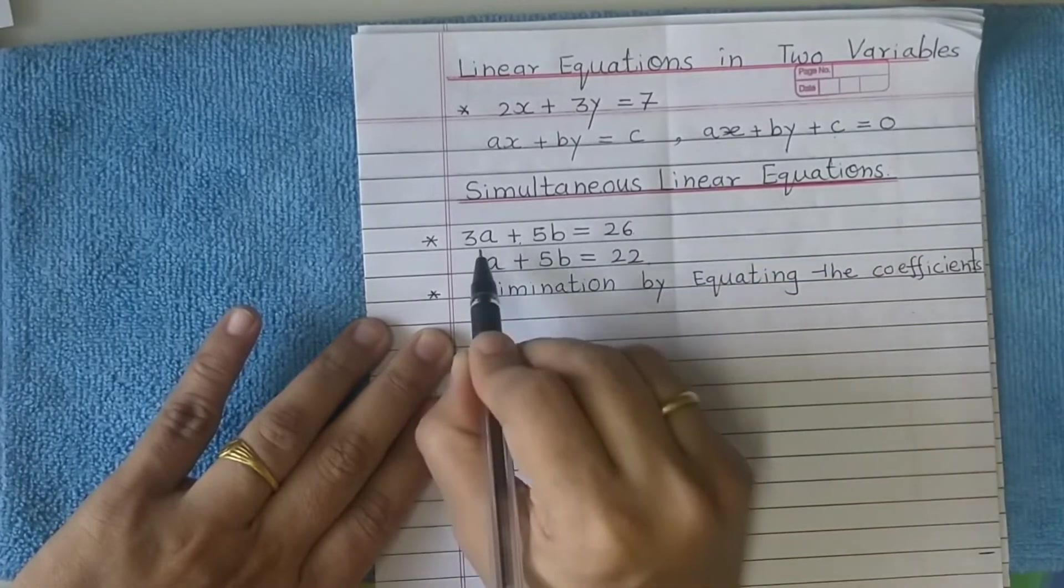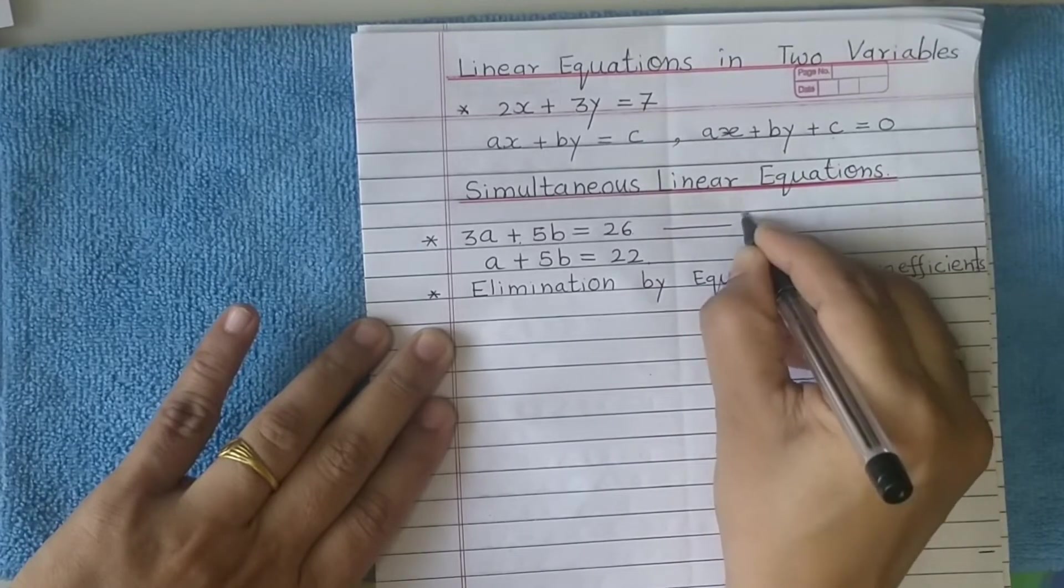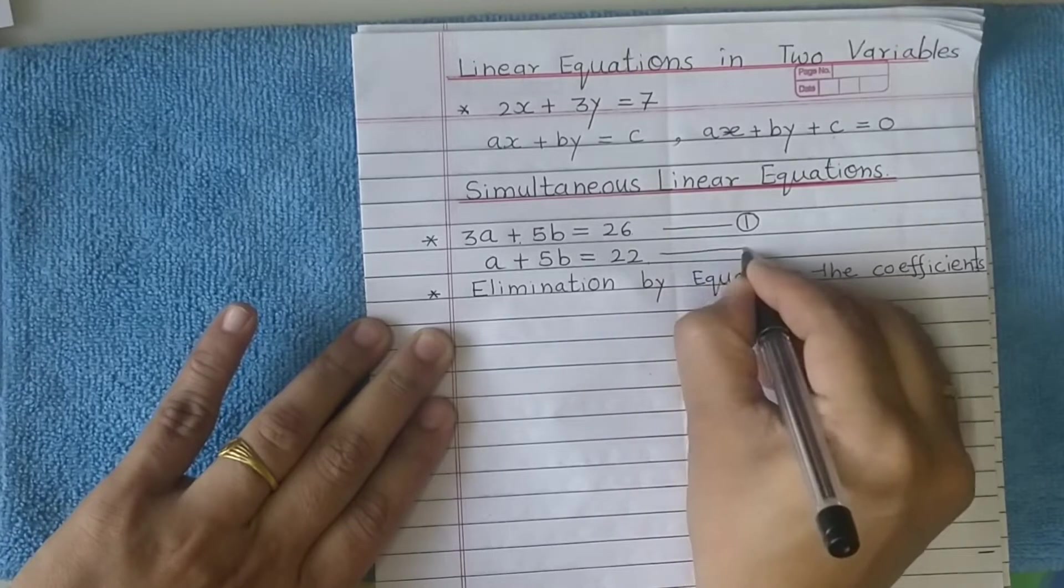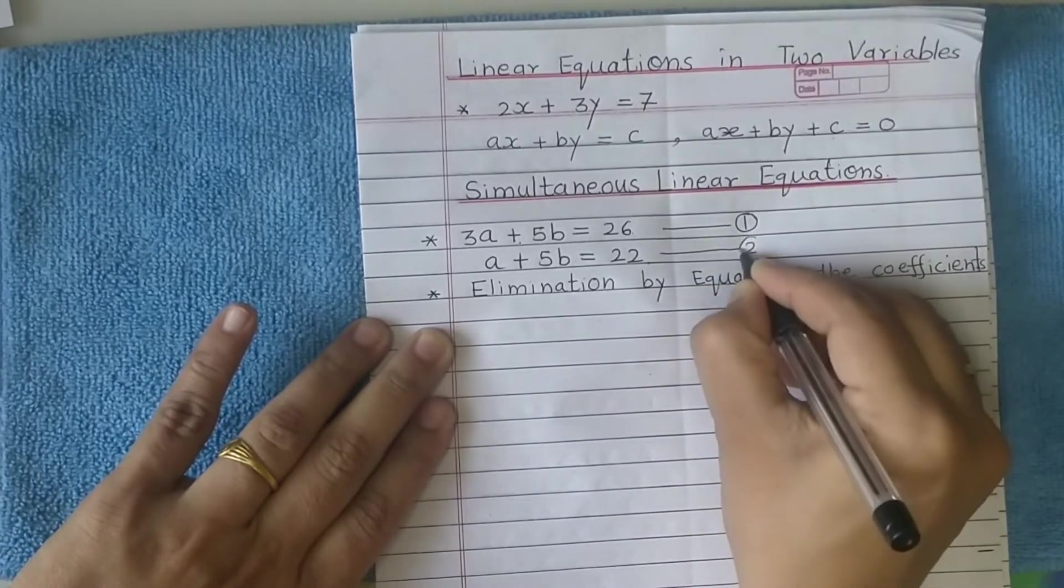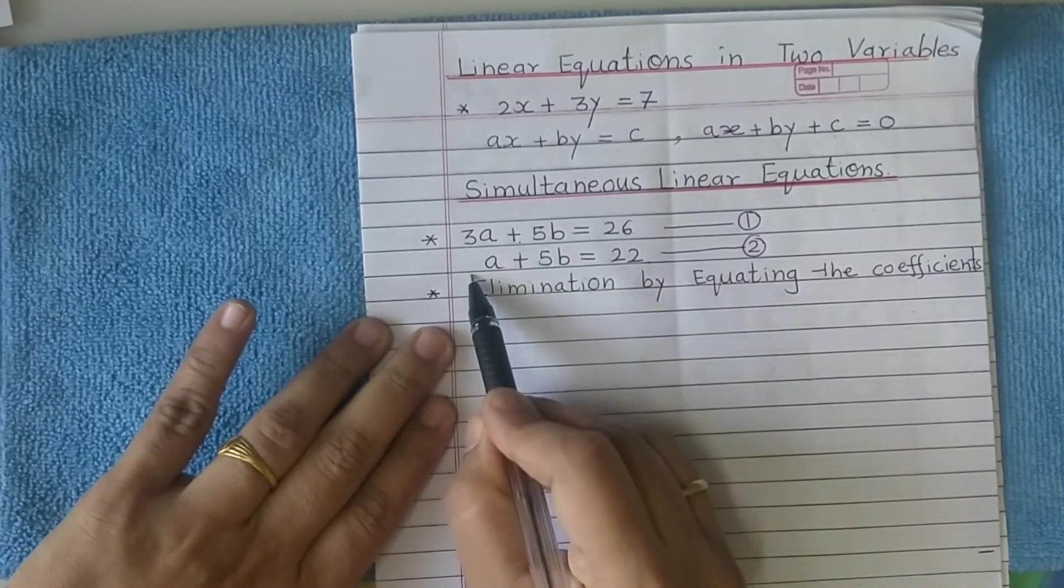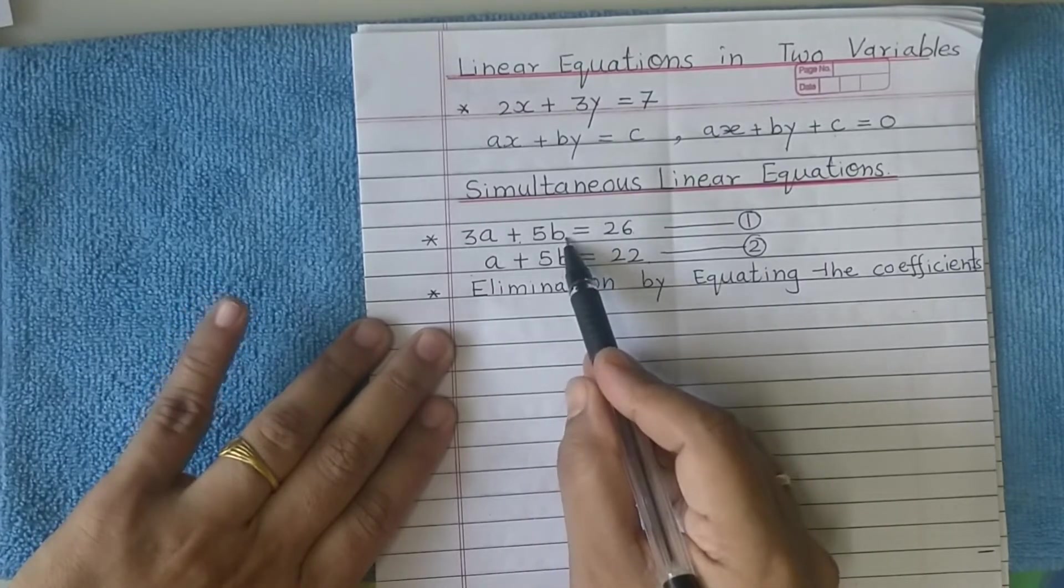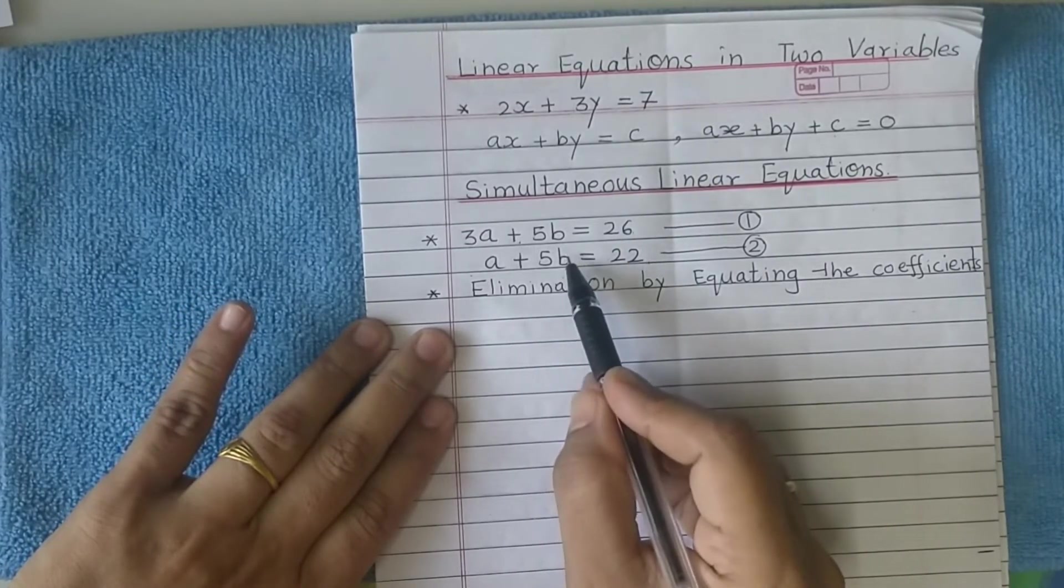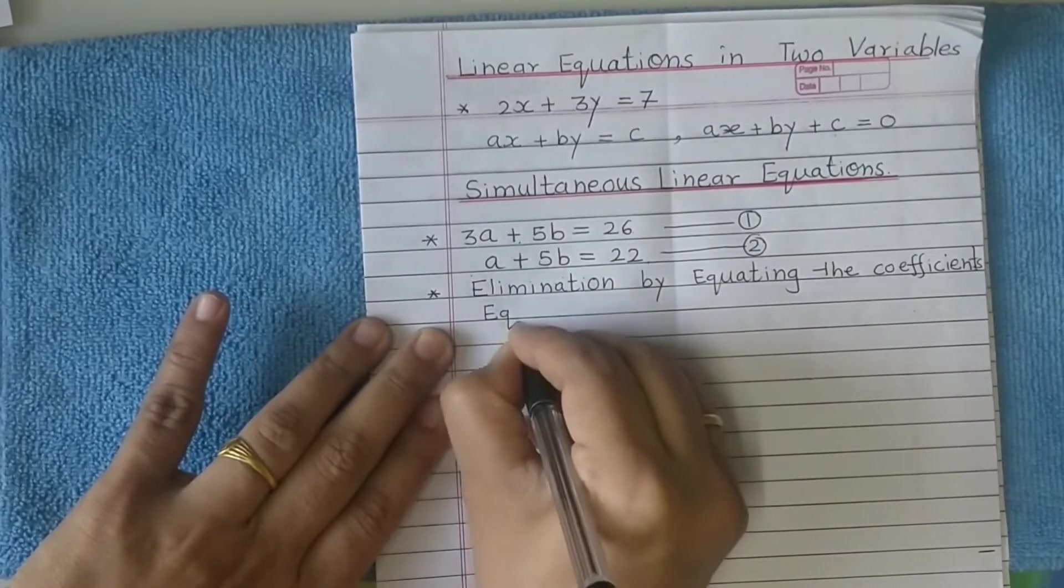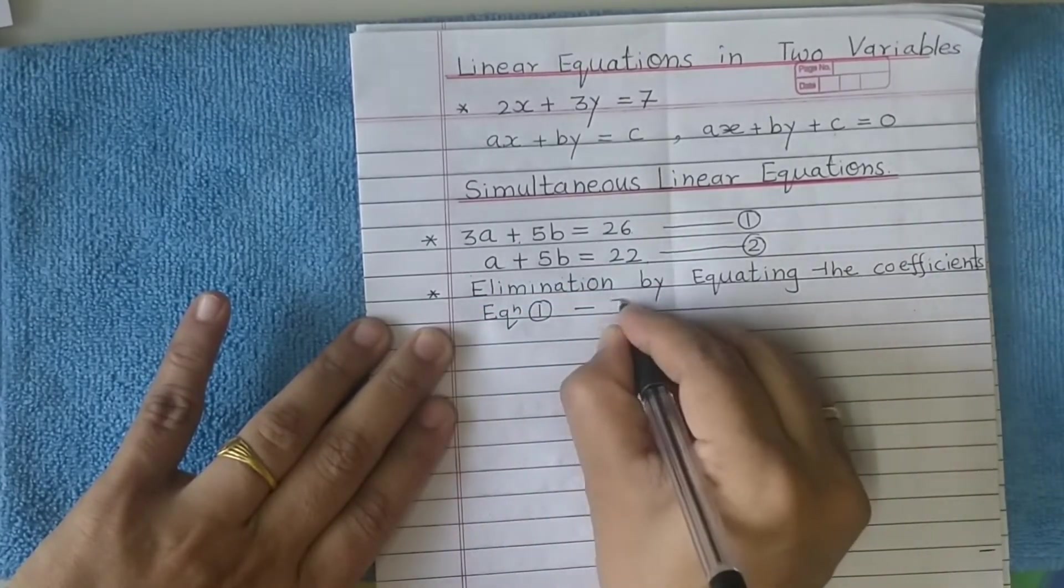So just let us try to solve this question: 3a plus 5b equals 26, that's equation 1. a plus 5b equals 22, that's equation 2. Look at the coefficients of a: 3 and 1. The coefficients of b are equal, so it will be very easy to eliminate b from these equations. So what we shall do is subtract equation 2 from equation 1.